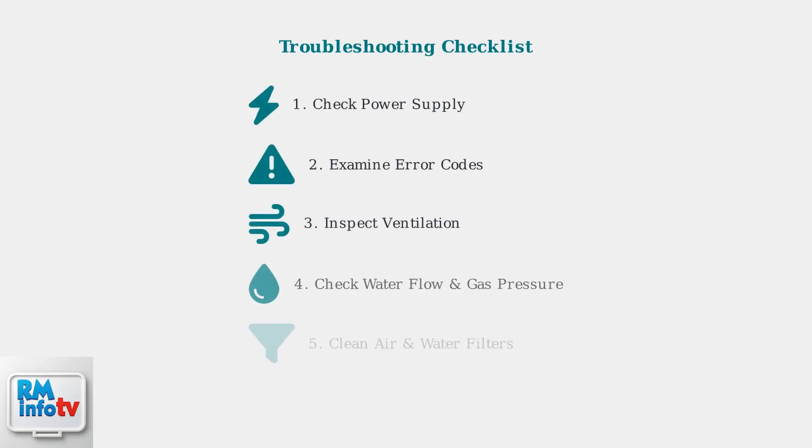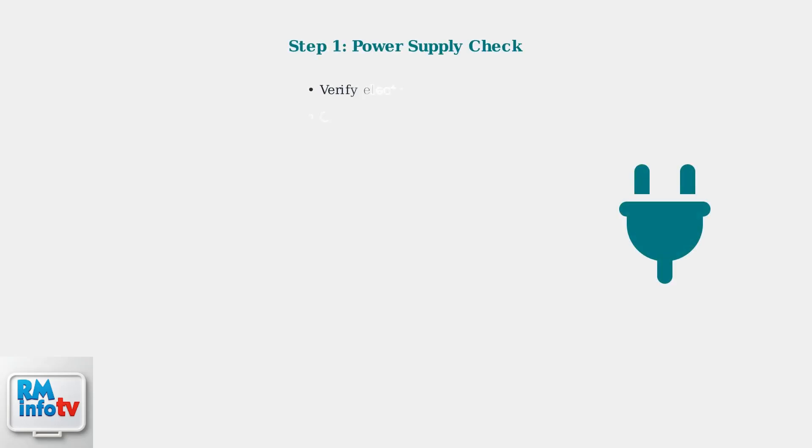When your Richmond tankless water heater isn't working properly, follow these systematic troubleshooting steps to identify and resolve the issue. First, verify the power supply. Check that the unit is receiving electricity and that all electrical connections are secure, as a simple power issue can often be the root cause of many problems.